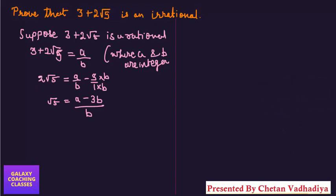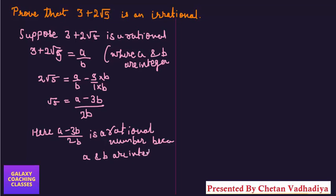So take root 5 here and take this 2 in the denominator. Now here on RHS you can see a minus 3b by 2b is a rational number, because a and b are integers.